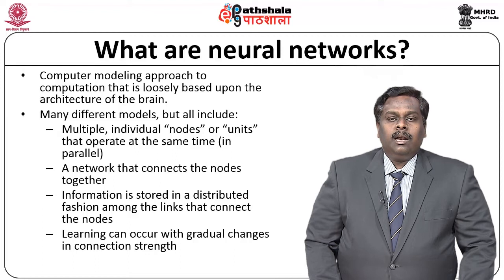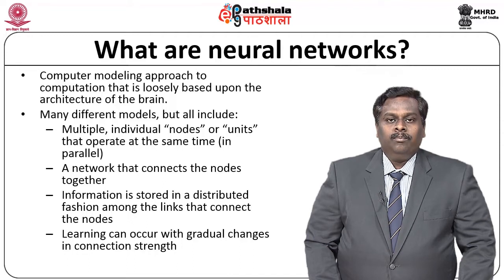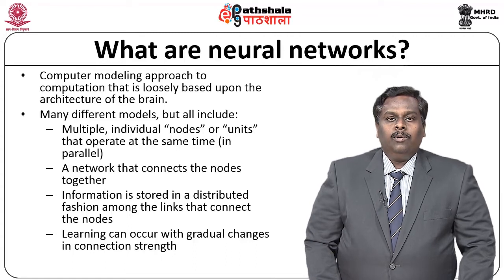The links that connect these nodes help in exchanging data across various nodes. Learning in any neural network occurs with a small or gradual change in the connection strength, and this change is going to be very minimal for each and every iteration. But over a period of various iterations, there will be a significant amount of change in the link strength or connection strength.